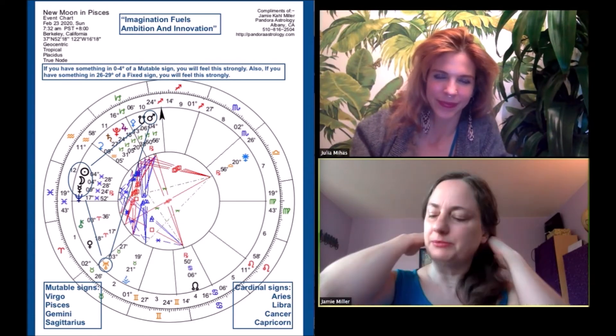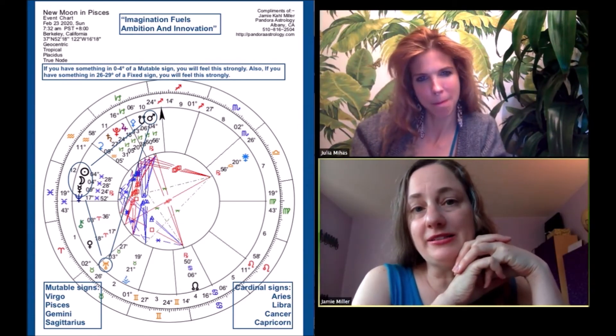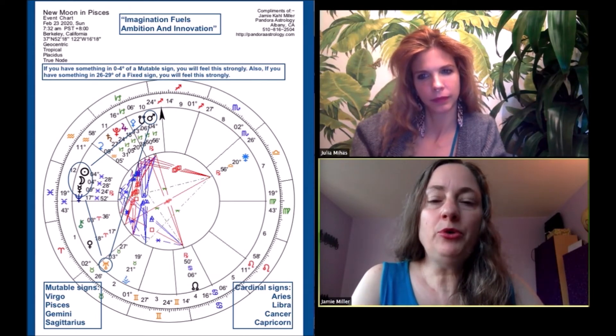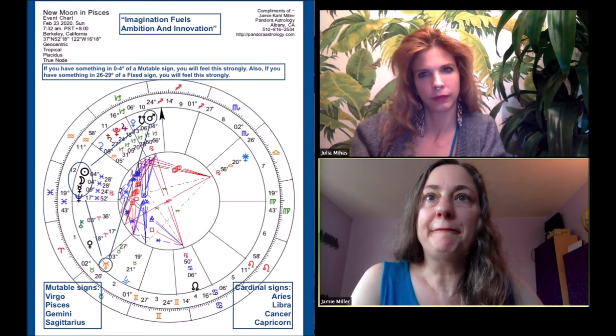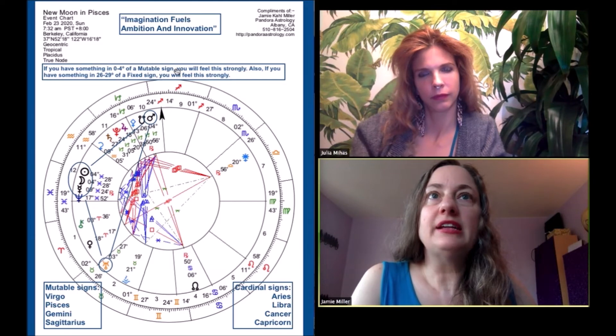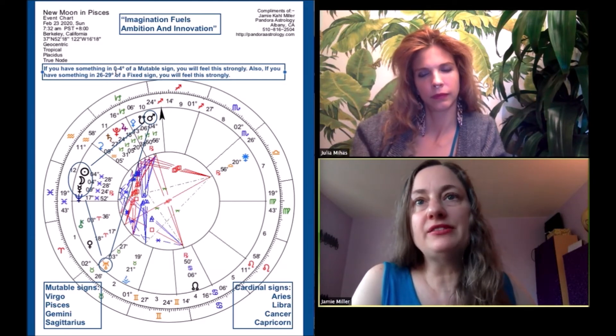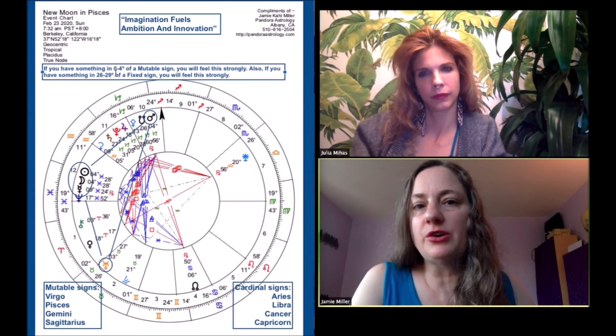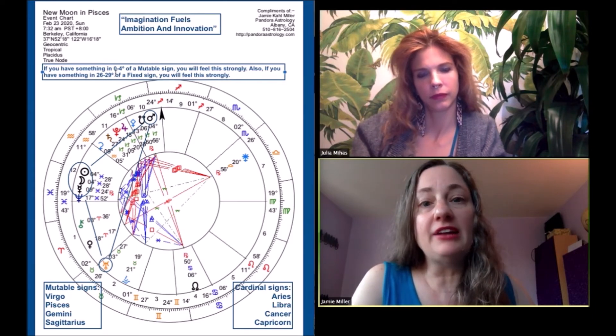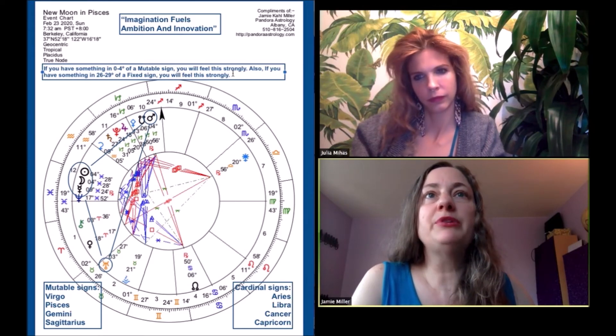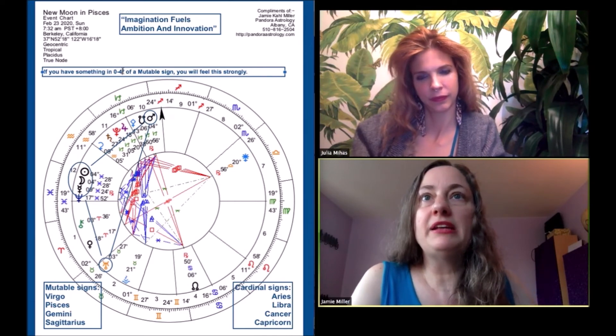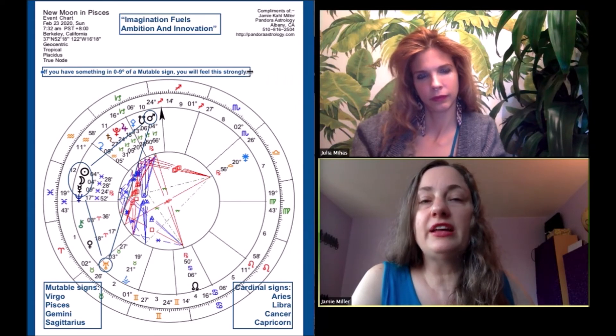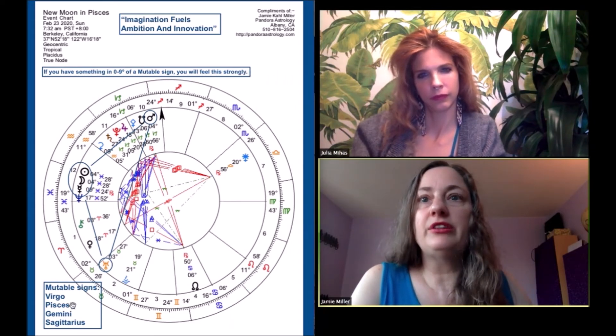So because this moon is happening at four degrees of Pisces, people who have planets in Pisces are really going to feel it. You know what? These dates are wrong. I'm going to change this. Basically, if you have something in zero to four degrees of Pisces, but also like as far into Pisces as about nine degrees, you're going to feel this. I had put some notes on here, but they're wrong. I'm going to take them out. So if you have something in basically zero to nine degrees of a mutable sign, you're really going to feel this.